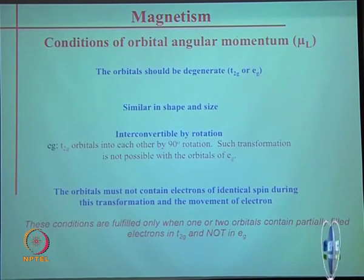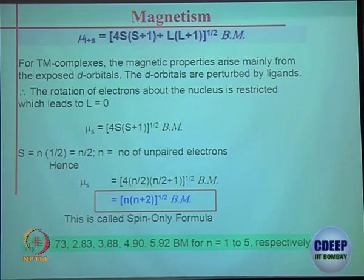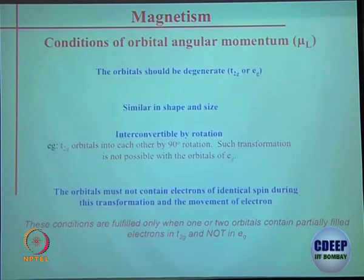This is the spin-only formula. Now we need to examine whether the spin-only formula is always valid, what we get experimentally, and when and how it deviates. That is what we are going to discuss — these are for the purists.